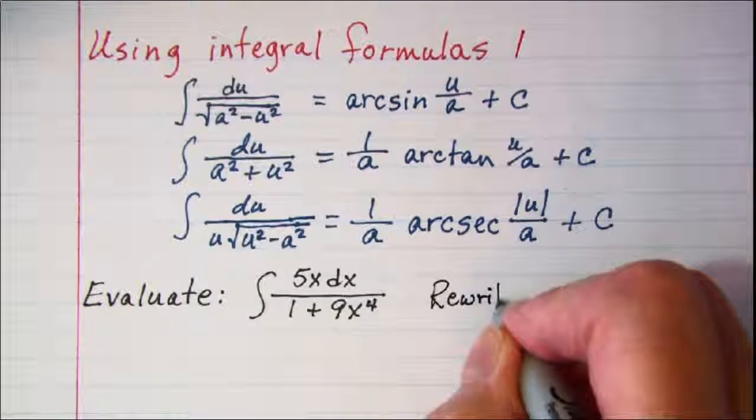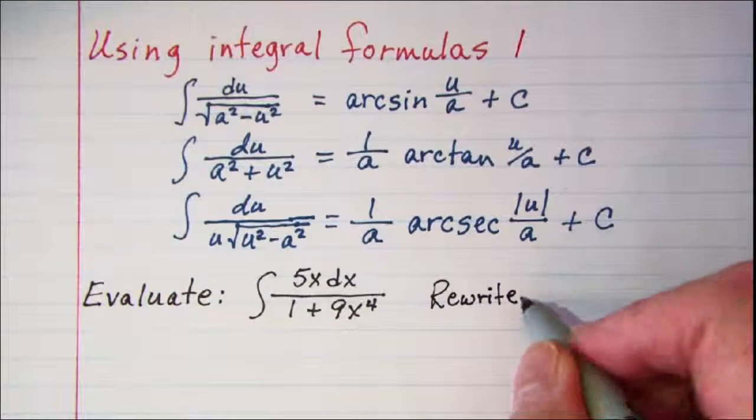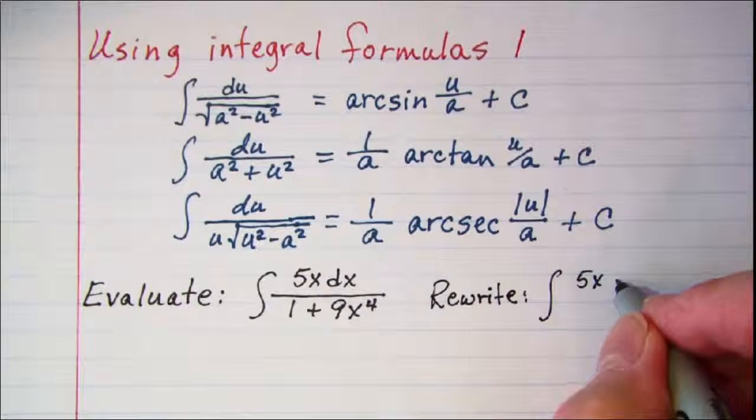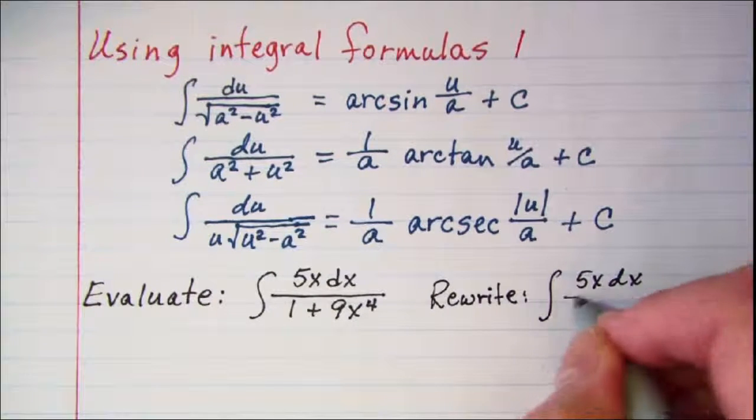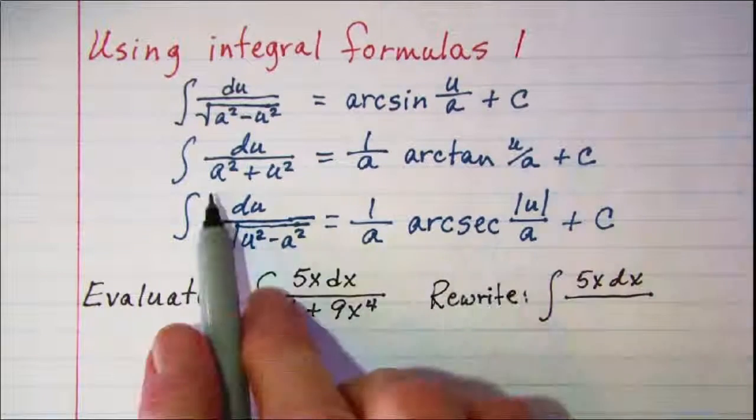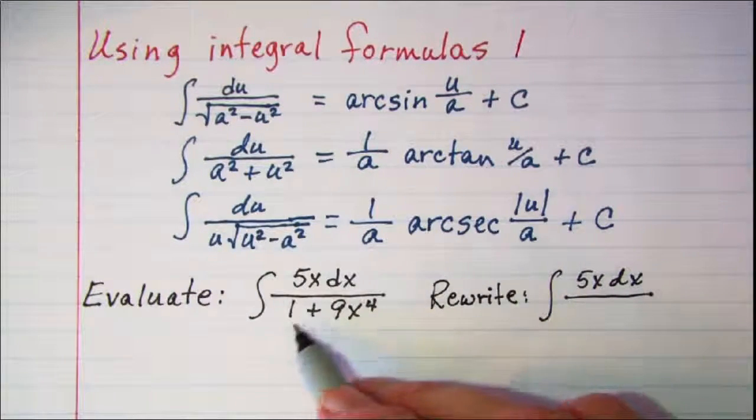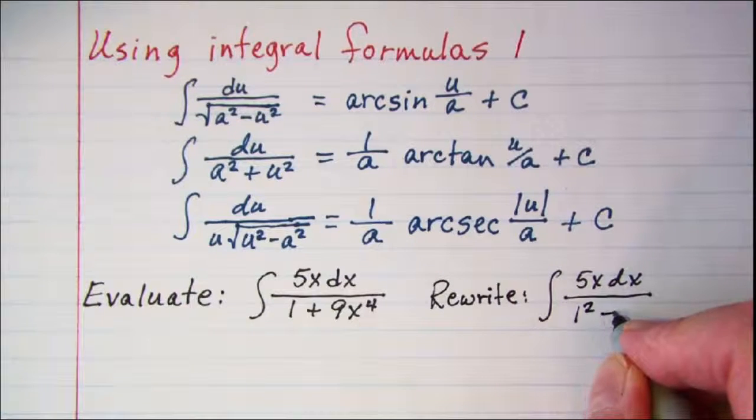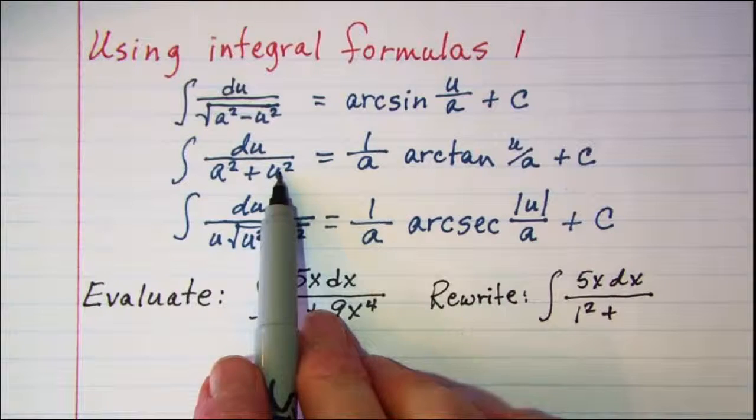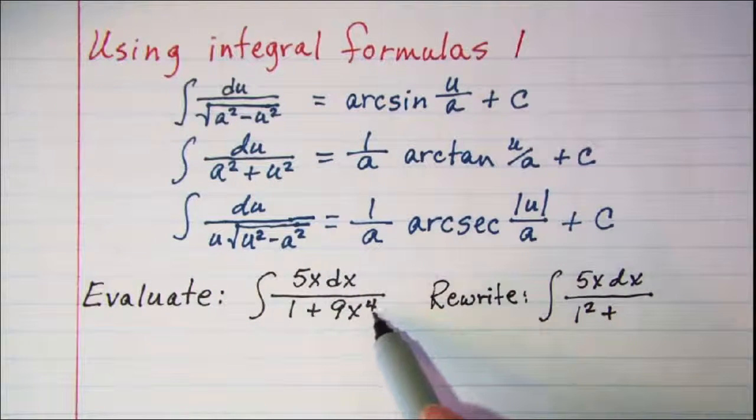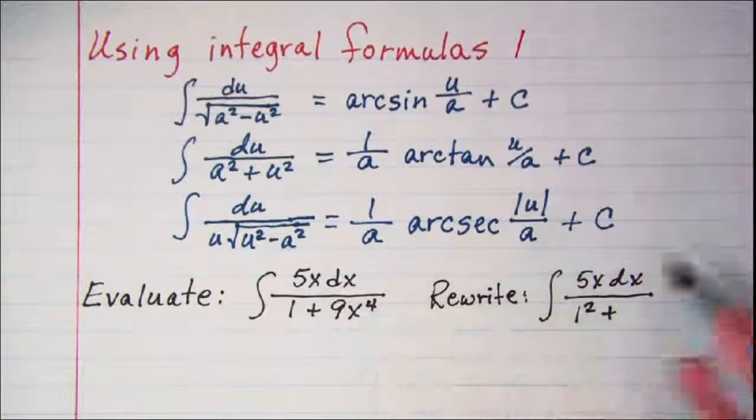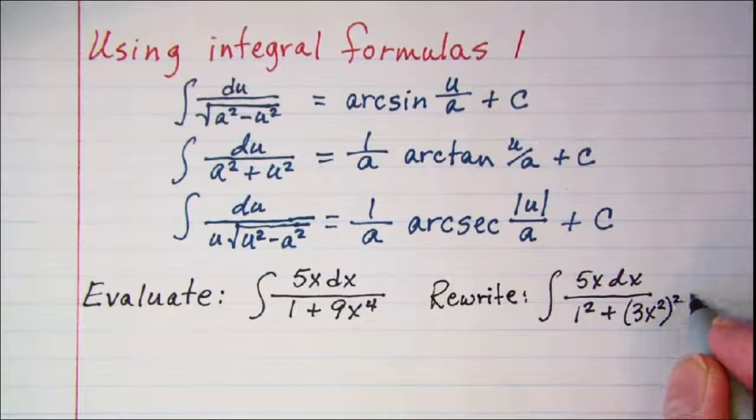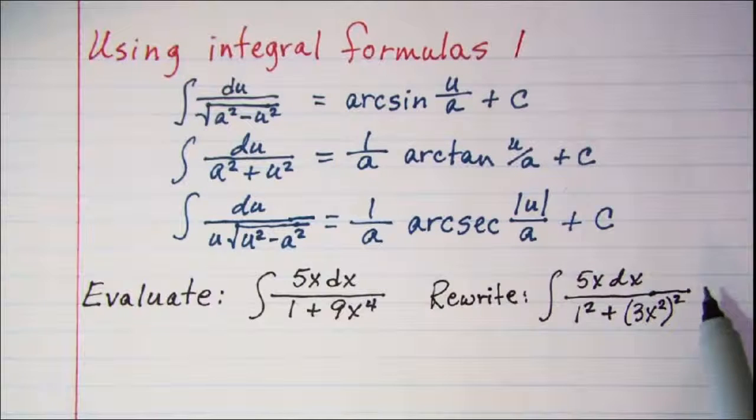So we'll first rewrite, and it is the integral of 5xdx divided by, and then I need a constant squared so 1 can be written as 1 squared plus, and then I need something squared here. So let's rewrite this as 3x squared quantity squared.